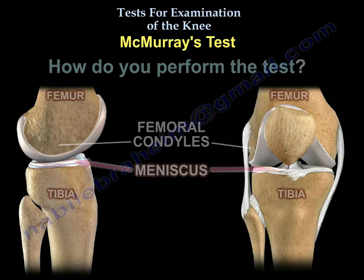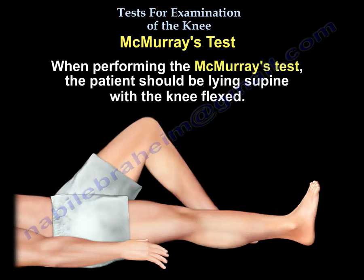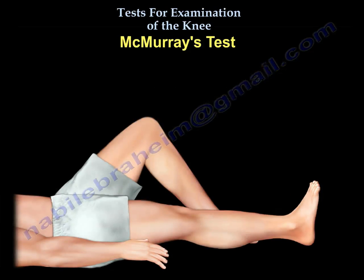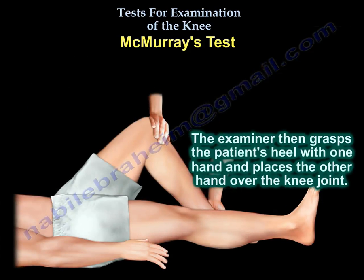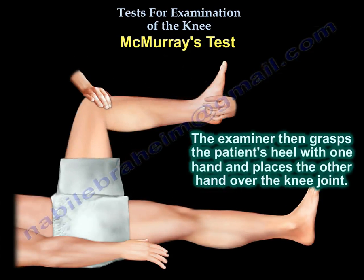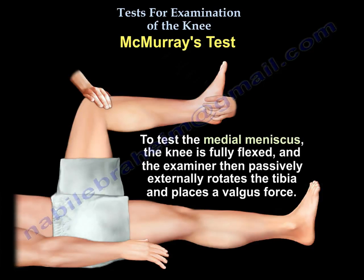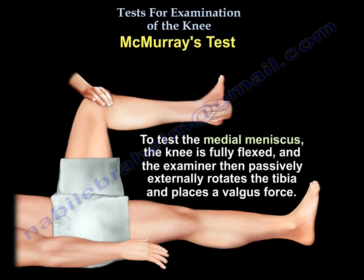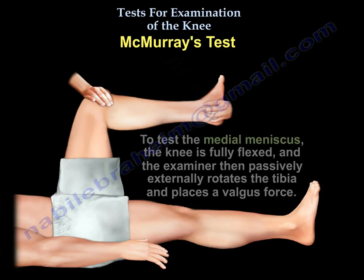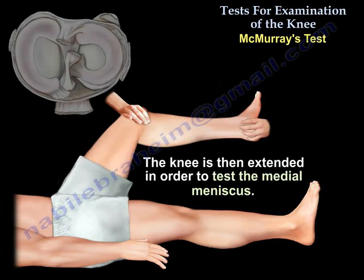When performing the McMurray test, the patient should be lying supine with the knee flexed. The examiner grasps the patient's heel with one hand and places the other hand over the knee joint. To test the medial meniscus, the knee is fully flexed, the examiner passively externally rotates the tibia and places a valgus force, then the knee is extended.